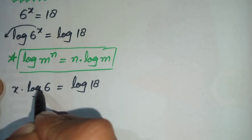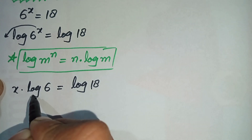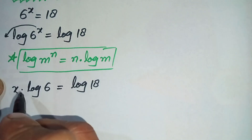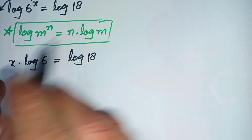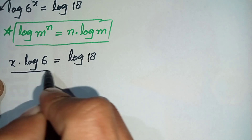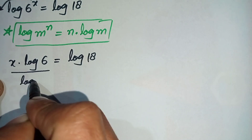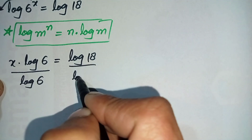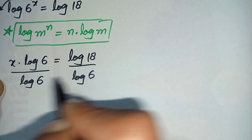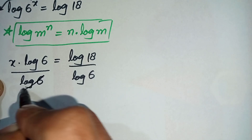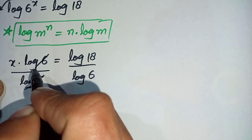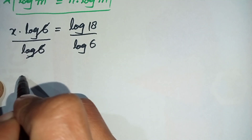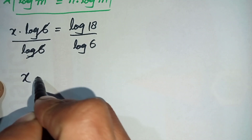Since we need to find the value of x, we will eliminate log of 6 from the left hand side. To do that, we will divide both sides by log of 6. This log of 6 and that log of 6 cancel each other, so in the left hand side only x will be left.